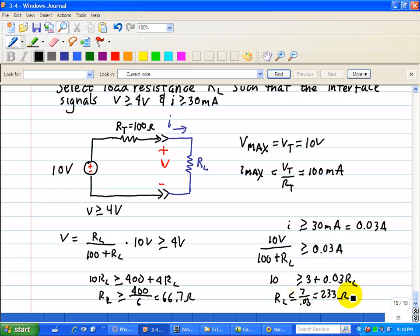Using, putting these two inequalities together, we can say that RL should be between 233 ohms and greater than or equal to 66.7.